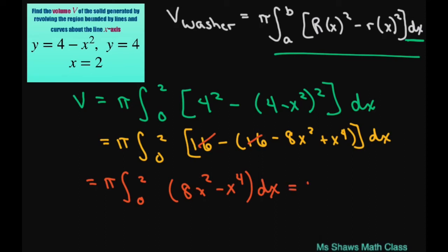Alright, let's integrate this. You're going to get pi times 8x cubed divided by 3 minus x to the power of 5 divided by 5, and we're integrating from 0 to 2.